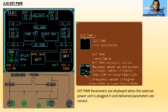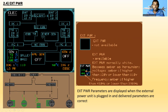Next is external power. When external power is not available, you can see it in the overhead panel. When external power is available, it normally shows white and becomes amber if there is under-voltage — amber if higher than 120 volts or lower than 110 volts. Frequency is amber if higher than 410 hertz or lower than 390 hertz. External power parameters are displayed when the external power unit is plugged in and delivered parameters are incorrect.